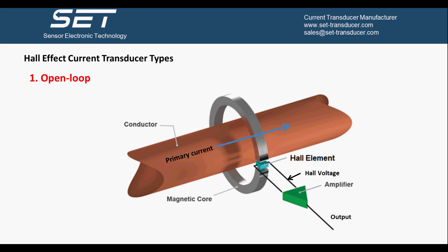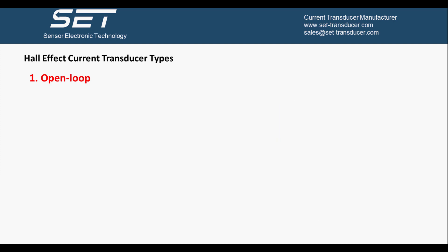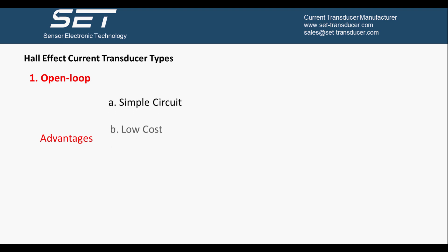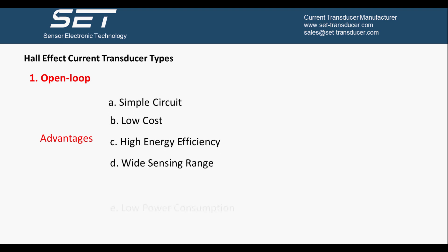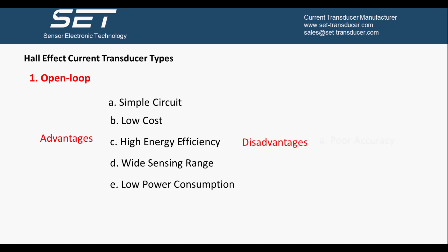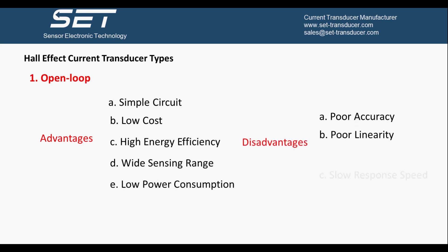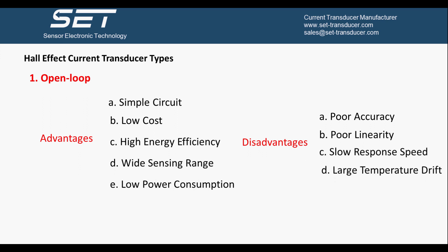The advantages of the open loop Hall Effect current transducer are simple circuit, low cost, high energy efficiency, wide sensing range, and low power consumption. The disadvantages are poor accuracy, poor linearity, slow response speed, and large temperature drift.